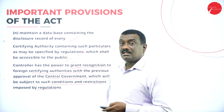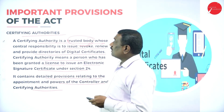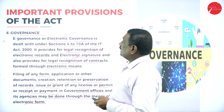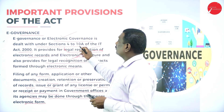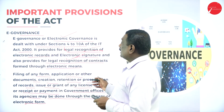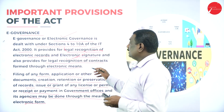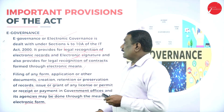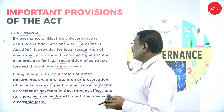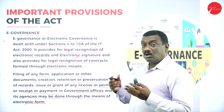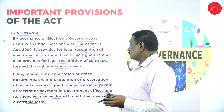To summarize: E-Governance, also called Electronic Governance, is dealt under Sections 4 to 10A of the IT Act 2000. It provides legal recognition of electronic records and electronic signatures, and thereby provides legal recognition of contracts formed through electronic means. Filing of any form, application, or document; creation, retention, and preservation of records; and issue or grant of any license, permit, receipt, or payment in government offices and its agencies may be done through electronic form.